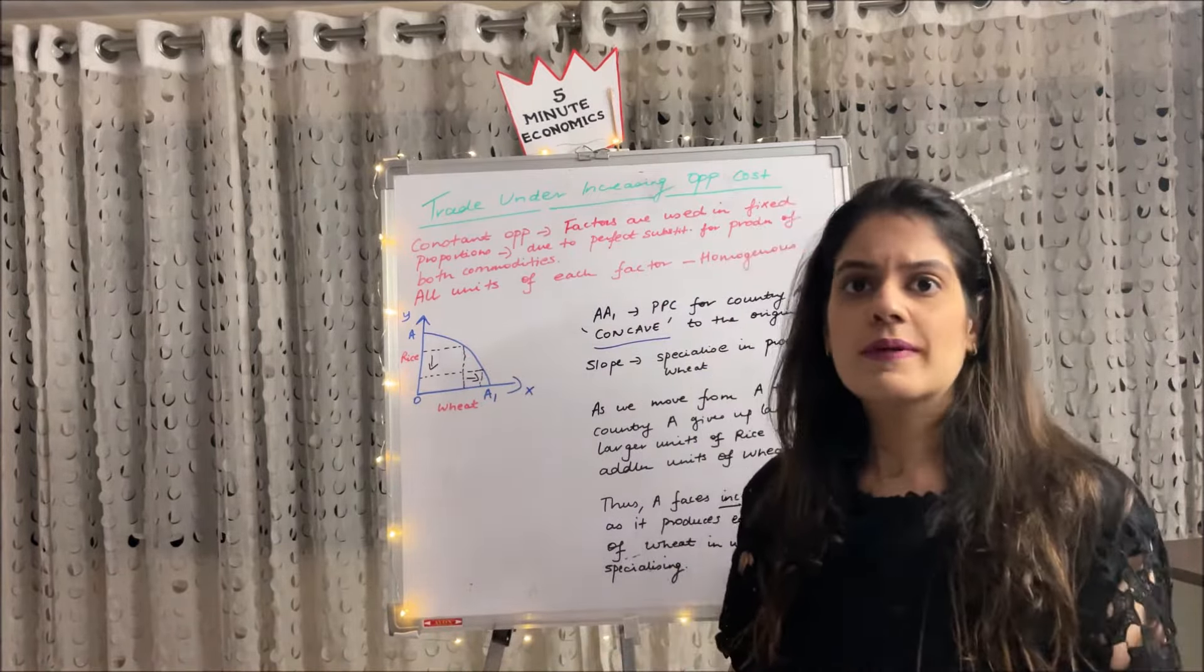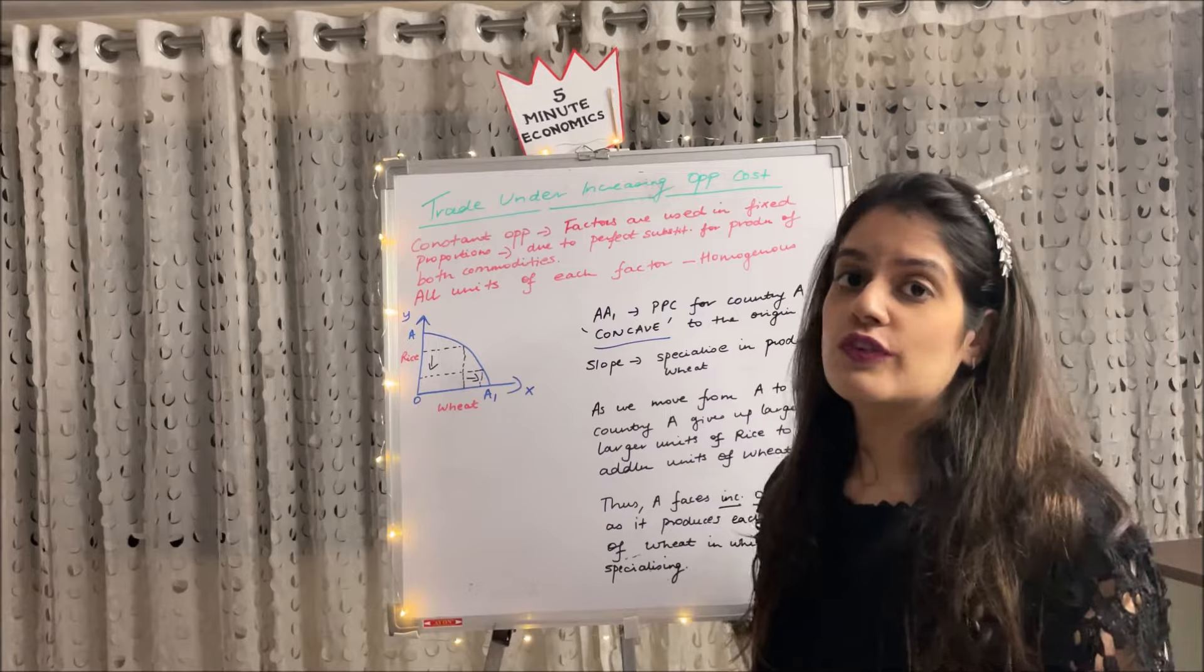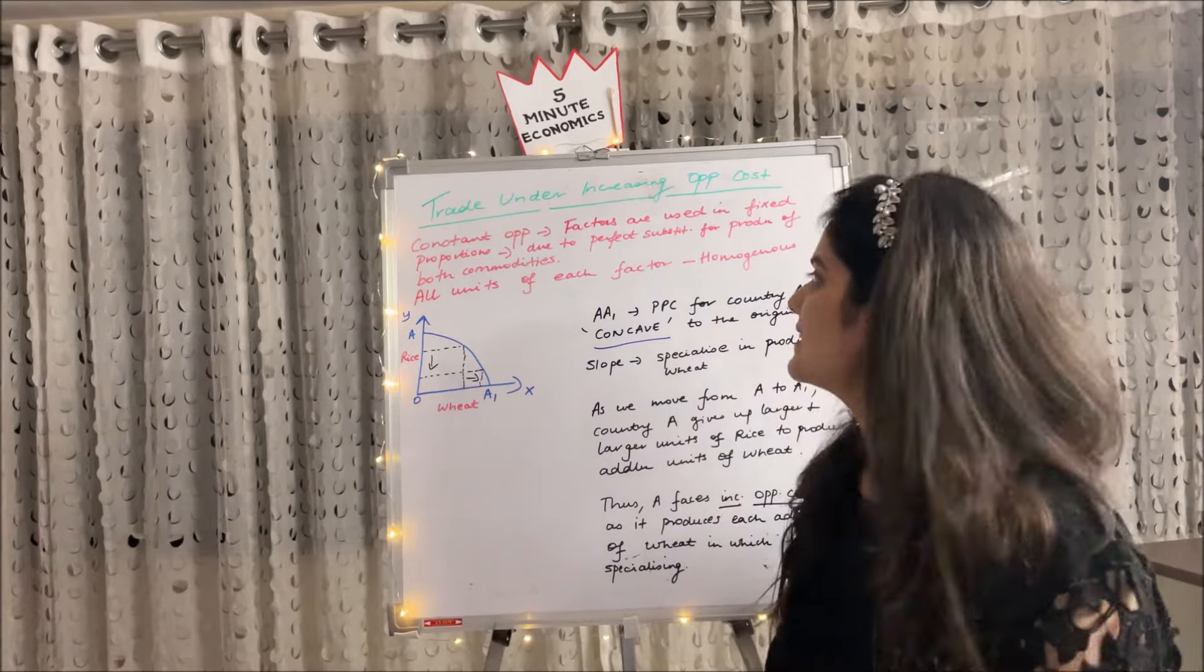For example, labor can be used for capital, capital can be used for labor, which is unrealistic and untrue. And secondly, all units of each factor are homogeneous, which definitely is not true.